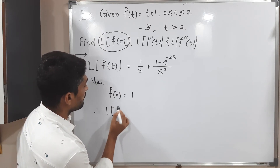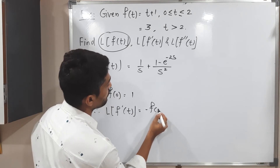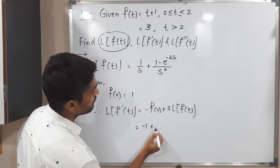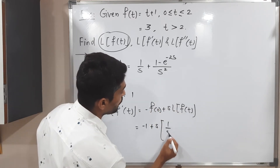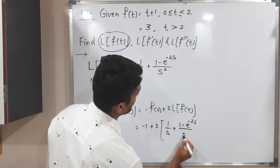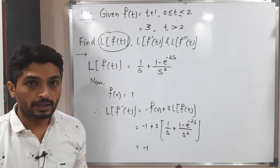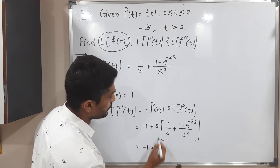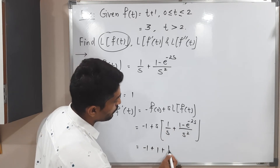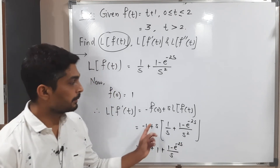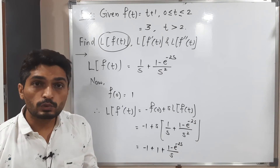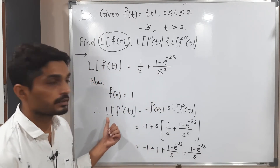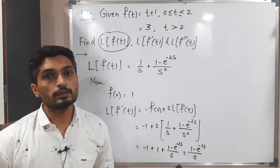Using the formula: Laplace of f-dash of t equals minus f of 0 plus s times L of f of t. Substituting f of 0 equals 1 and L of f of t equals 1 by s plus 1 minus e raised to minus 2s upon s squared, then multiplying by s: the s cancels with s giving 1, and s cancels one factor of s squared leaving s. So plus 1 and minus 1 cancel, giving the result: Laplace of f-dash of t equals 1 minus e raised to minus 2s upon s.